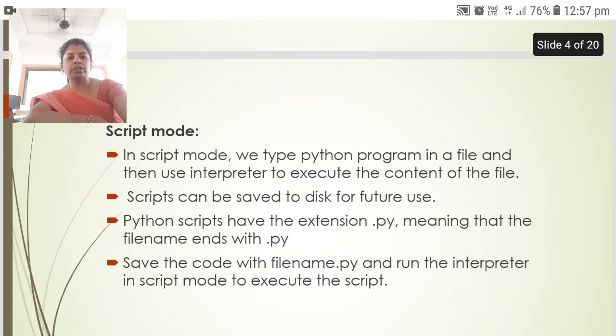In script mode, we type Python program in a file and then use interpreter to execute the content of the file. Scripts can be saved to disk for future use. Python scripts have the extension .py meaning that the file name ends with .py. Save the code with filename.py and run the interpreter in the script mode to execute the script.